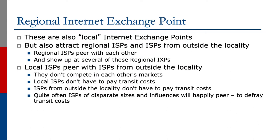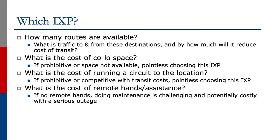It's cheaper for ISPs to turn up at a regional exchange point and peer with each other than it is to buy transit to do the same thing. So which IXP would we go to? It all depends on how many routes are available, what the traffic is to and from these destinations, and by how much it will reduce the cost of transit.